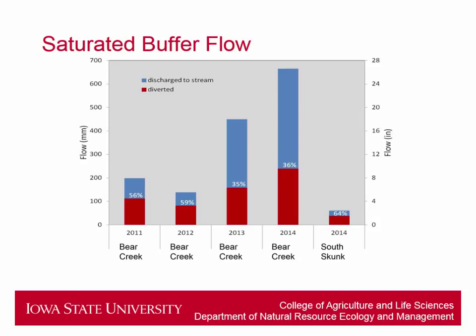Some flow data collected for both sites shows that in years where there was less flow — less water coming out of the field — over 50% of the total flow was diverted into the saturated buffer, with the rest as overflow going right to the stream. However, in wet years like 2013–2014, Bear Creek only had 35% and 36% of the water diverted into the saturated buffer.